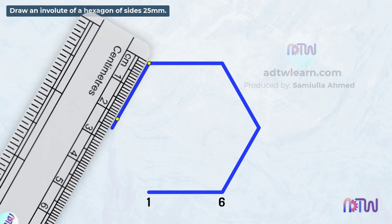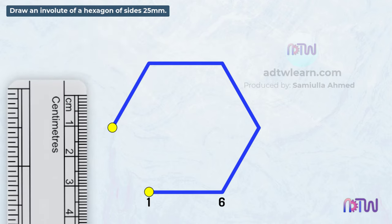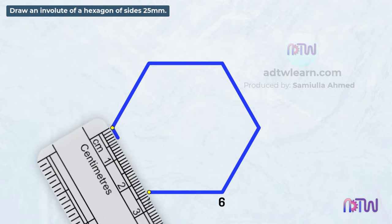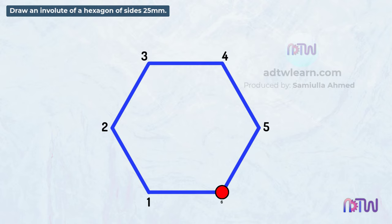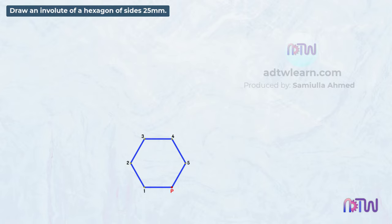At last, join these points. This is our hexagon having 25 millimeter sides. Mark these points as 2, 3, 4, and 5. After this, we need to consider an initial point — we will consider this point as the initial point. Mark this point as P. After this, we need to extend the lines from each of these points. Take a ruler and extend lines from each of these points.